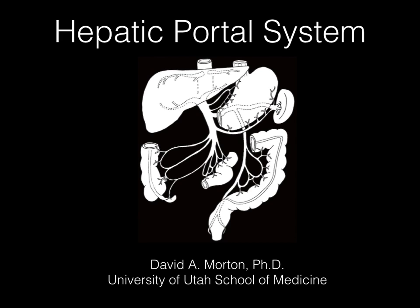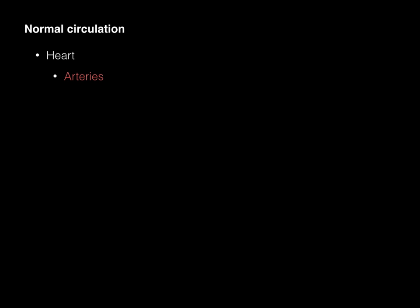Let's talk about the hepatic portal system. To do that, we've got to discuss normal circulation. The heart pumps blood out of arteries, which branch into arterioles, which give rise to capillaries where gas and fluid exchange occurs with the interstitium. Venules leave the capillaries and become veins, which go back into the heart, and the circulation begins again.